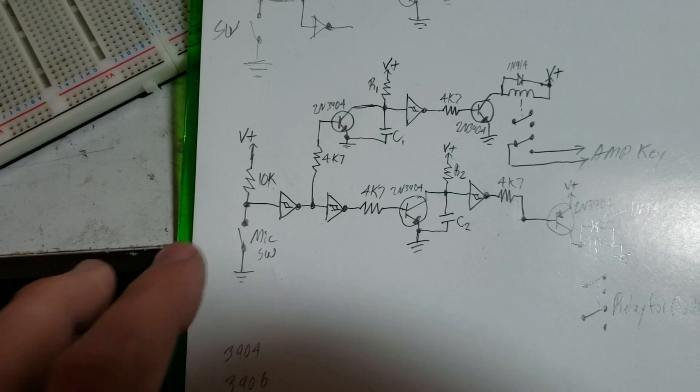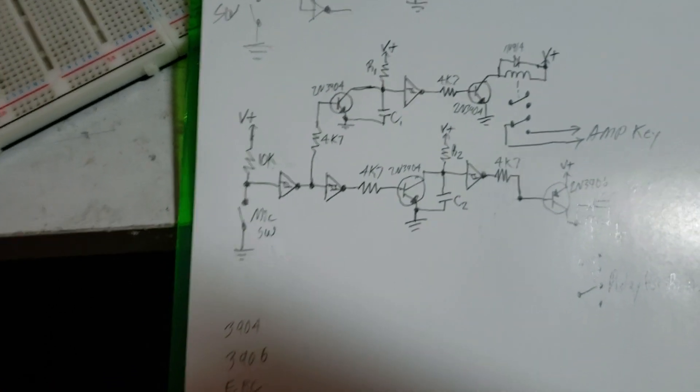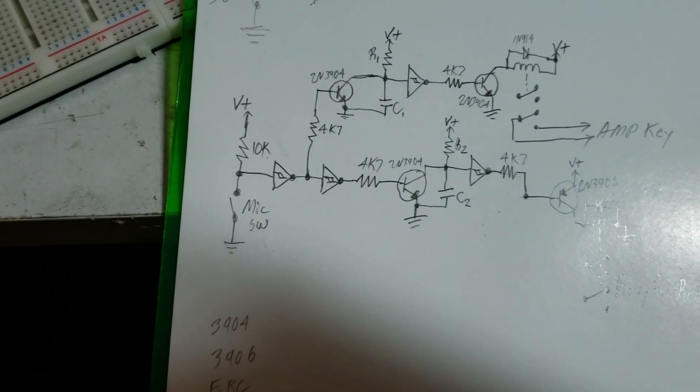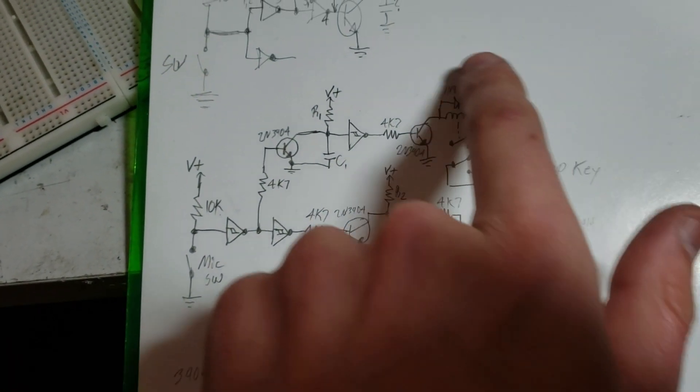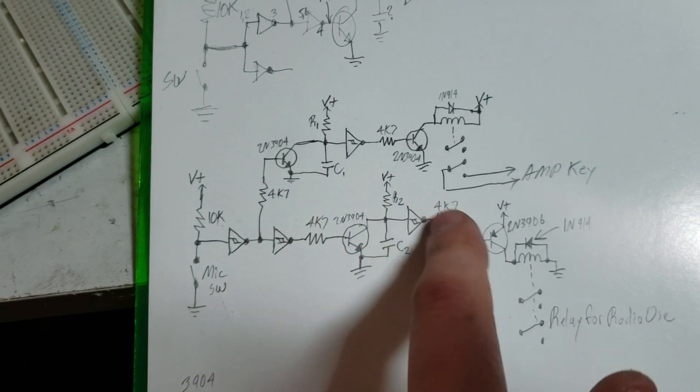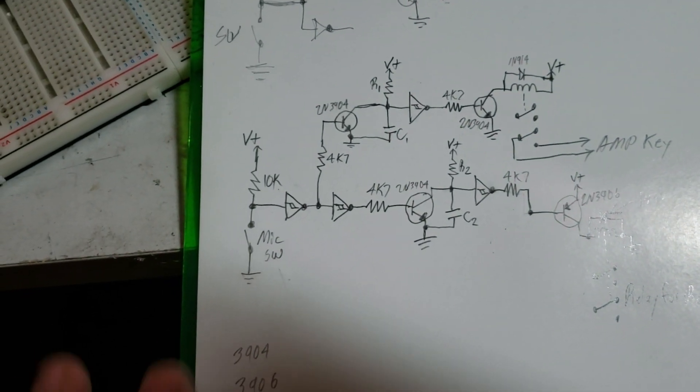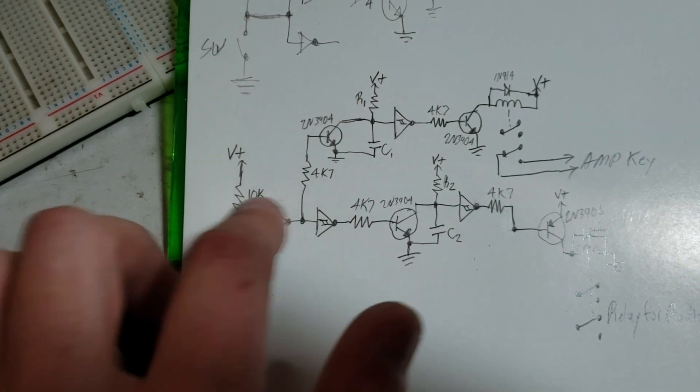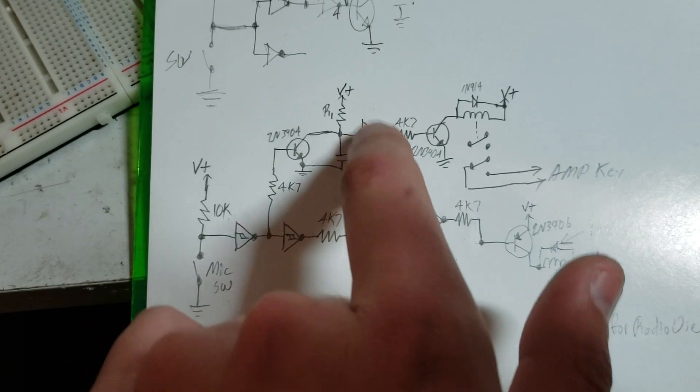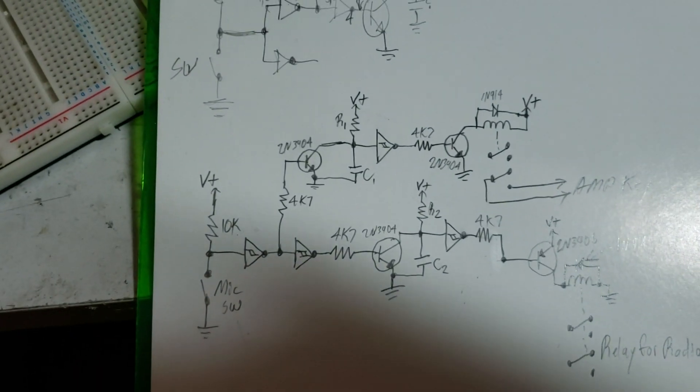So over here's our microphone switch. If you're running a direct injected radio, you're not going to be keying it with a stock mic. So a single pull, single throw switch is perfectly fine. This section up here is for keying the amp and this section down here is for keying the rest of the radio. So for example, when we click this on, power goes up through here and we've got a resistor and capacitor pair. And this is what creates our time delay.